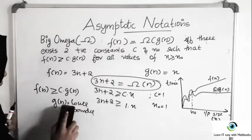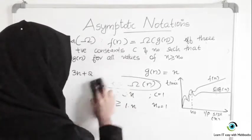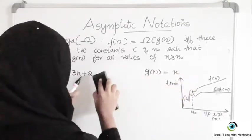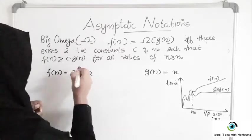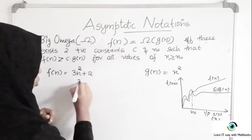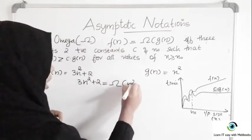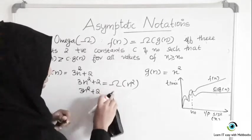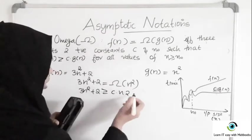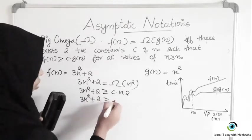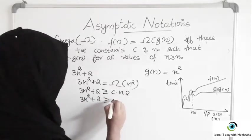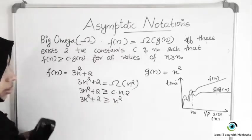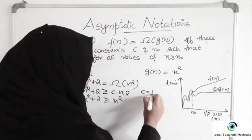Let's see one more example. I am taking F of N as 3N square plus 2, and G of N as N square. If I want to write F of N is Big Omega of N square, I need C and N0 such that 3N square plus 2 is greater than or equal to C times N square. Taking C as 1 — a safe and easy choice — even when N equals 1, this is 3 plus 2 equals 5 which is greater than N square, so the inequality always holds. So C equals 1 and N0 equals 1.